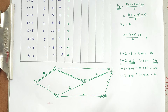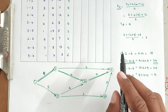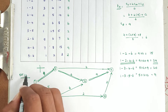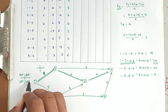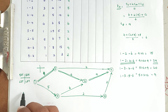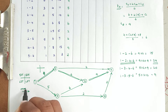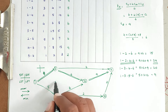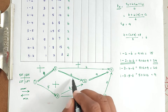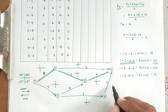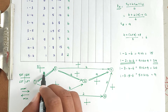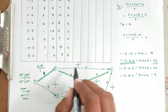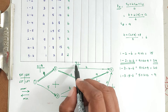Now we find EST, EFT, LST, and LFT, then total float. In the network diagram boxes, we label EST, EFT, LST, and LFT. When going forward we take the maximum value; when going backward we take the minimum value. We start with 0; then 0 + 9 = 9, so EFT of activity 1-2 is 9. Then 9 + 6 = 15.